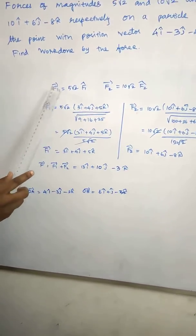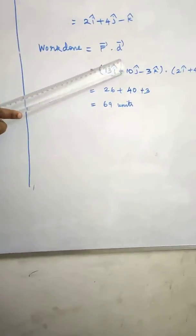K is called work done. Work done is equal to force into displacement.